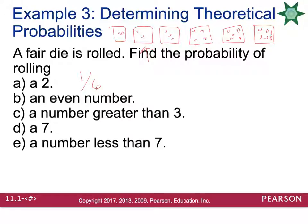Question B. What's the probability of rolling an even number? Well, we could roll a two, a four, or a six, which is three out of six. And you should reduce your fractions if you're going to keep it a fraction. It would be one half.